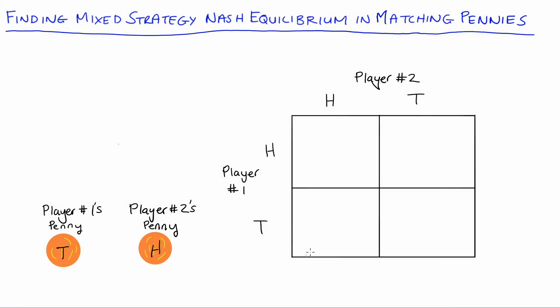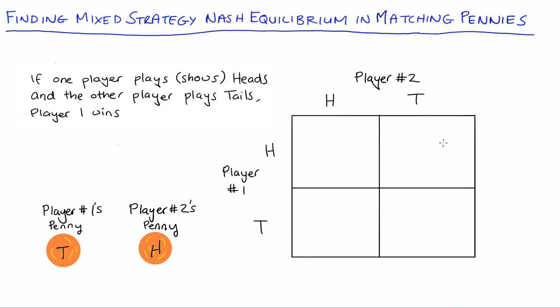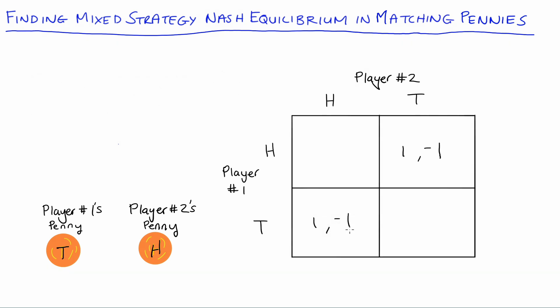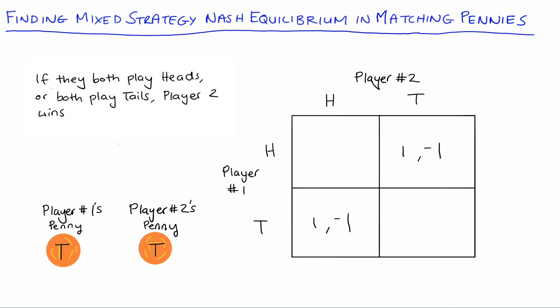When the game plays, each of our players will either show heads or tails at the exact same time. If one player shows heads and the other shows tails — so if there's a mismatch — then player one wins, they get one, and player two loses, they get negative one. On our matrix that would be player one plays heads and player two plays tails, or player one plays tails and player two plays heads. If both players end up playing the same side — both heads or both tails — then player one loses (negative one) and player two wins (one).